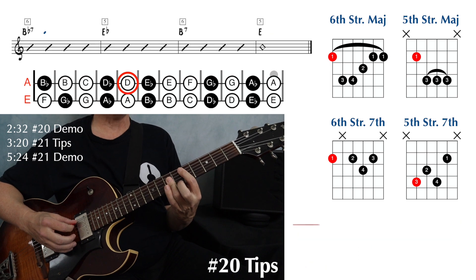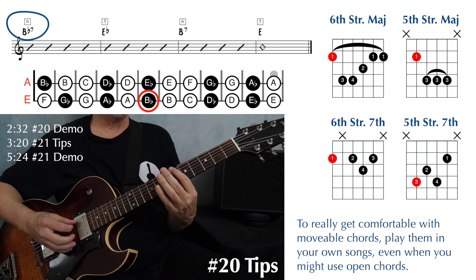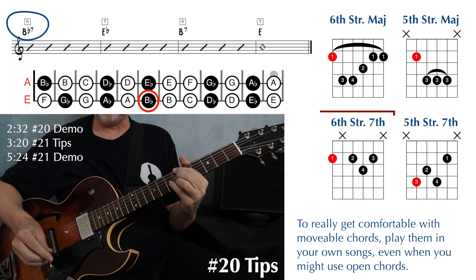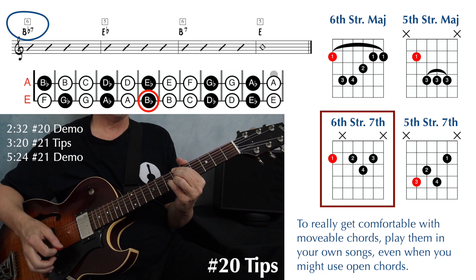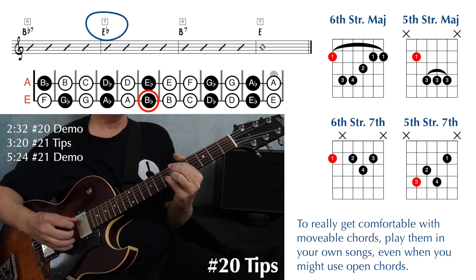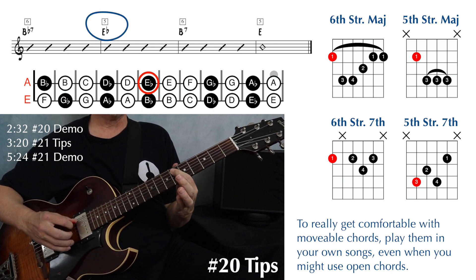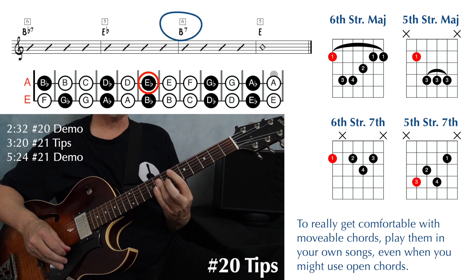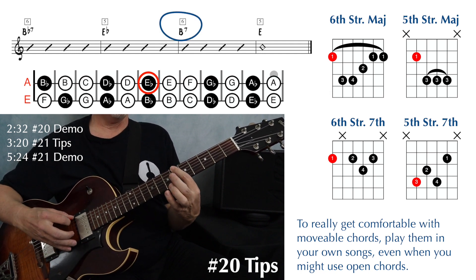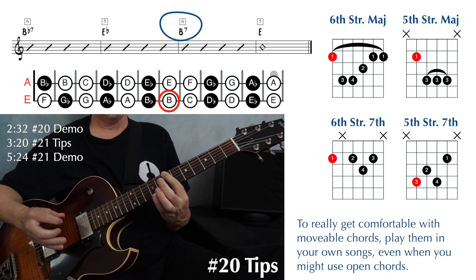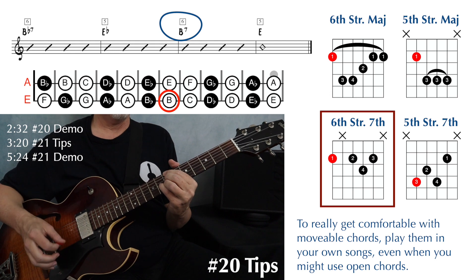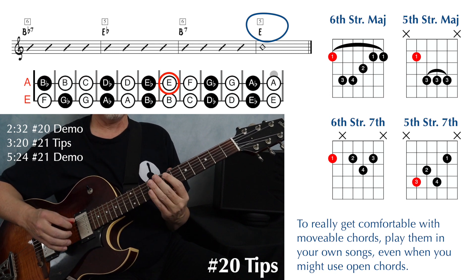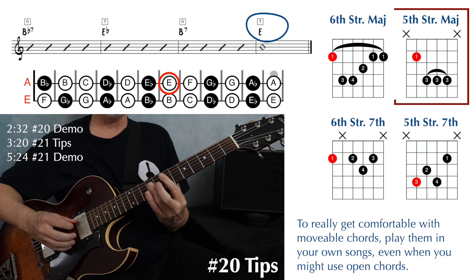Working our way up the fretboard again, we have a Bb7 on string six. That'll be at the sixth fret on string six — that's where your Bb root is. And again, that will be with that same dominant seven shape on the sixth string. And then we have an Eb major on string five, also at the sixth fret, just on the other string, using that fifth string shape. And then finally a B7 on string six — if your Bb was at the sixth fret, your B natural has to be at the seventh fret, using that sixth string dominant seven shape. And then ending on an E major on string five — our E note on string five is at the seventh fret, and we play our fifth string major shape.